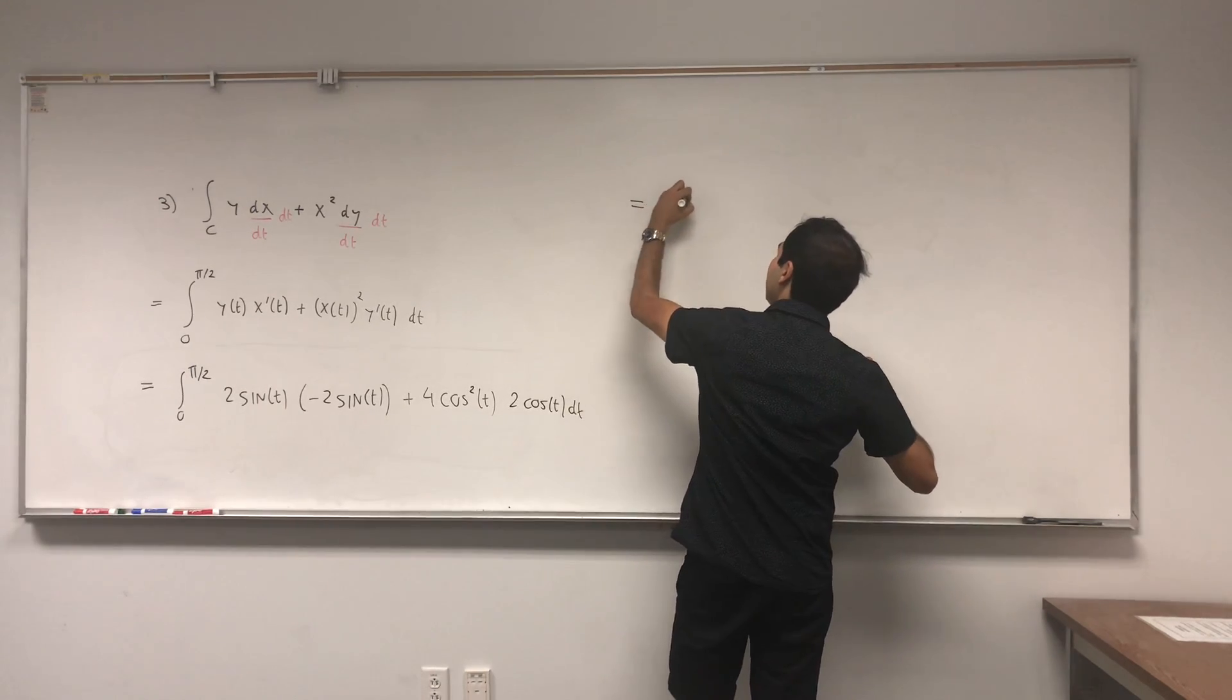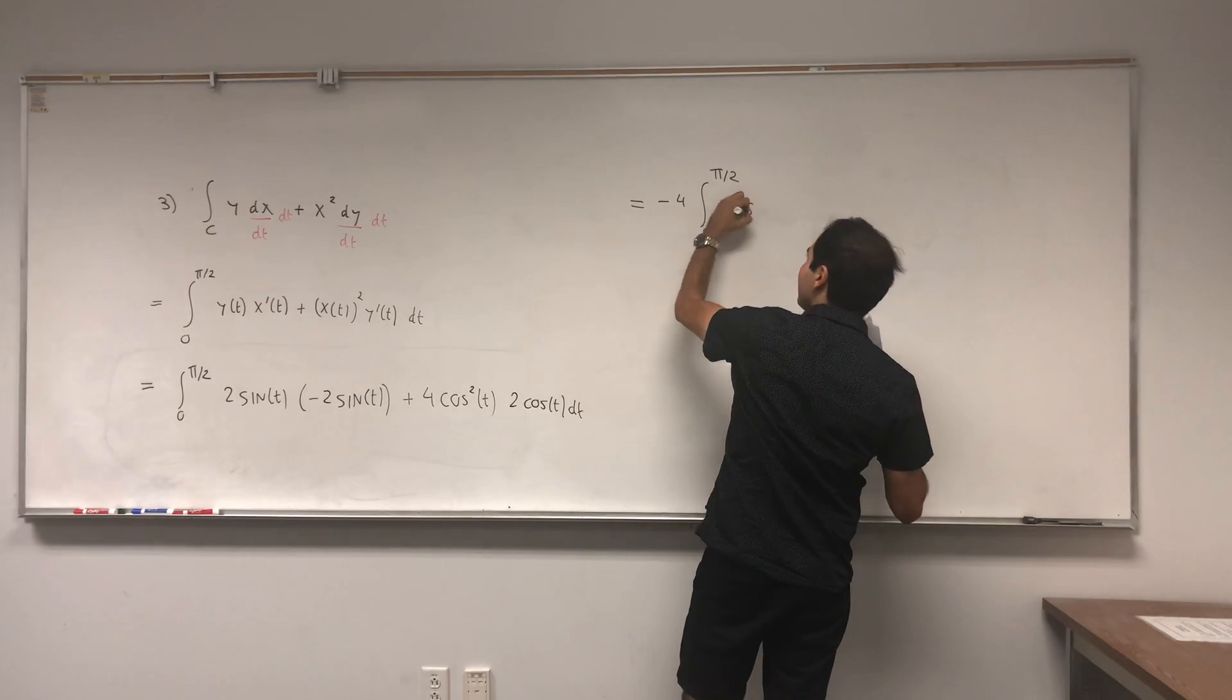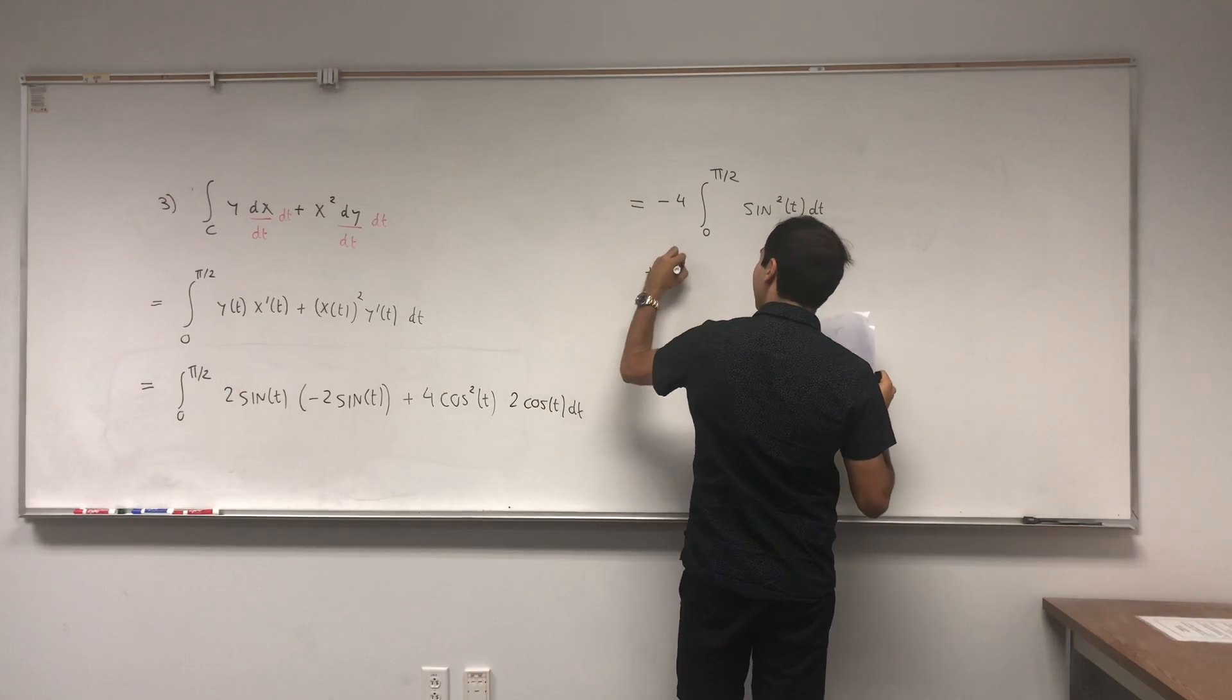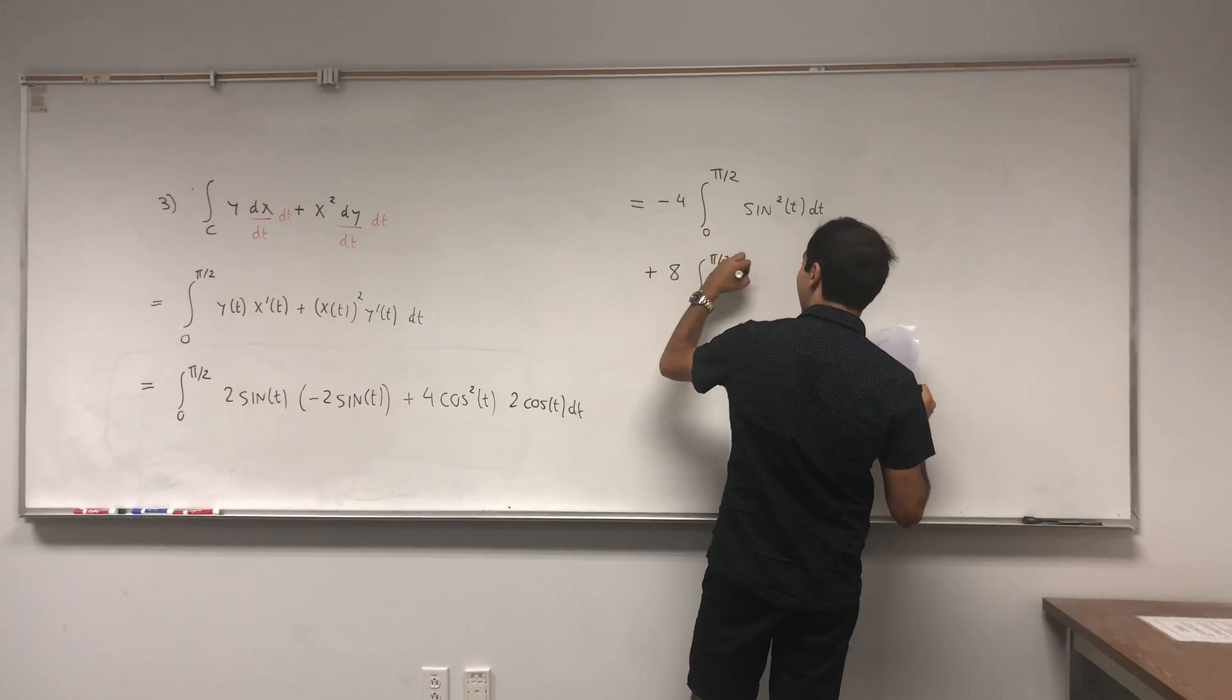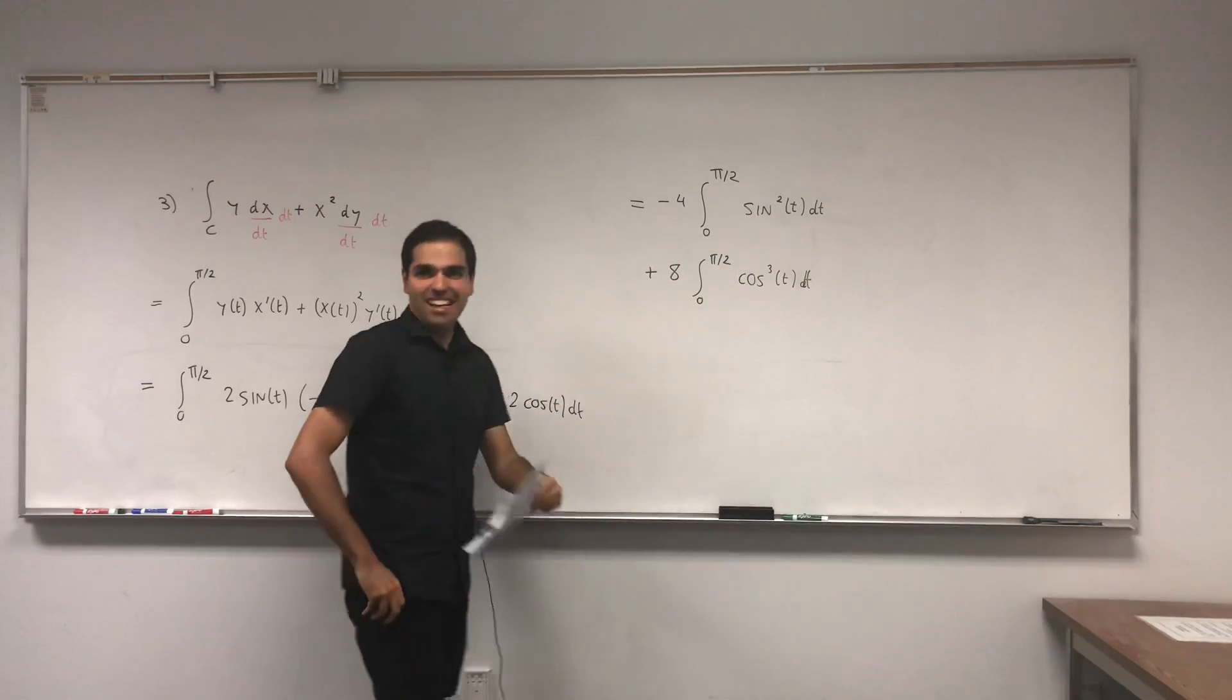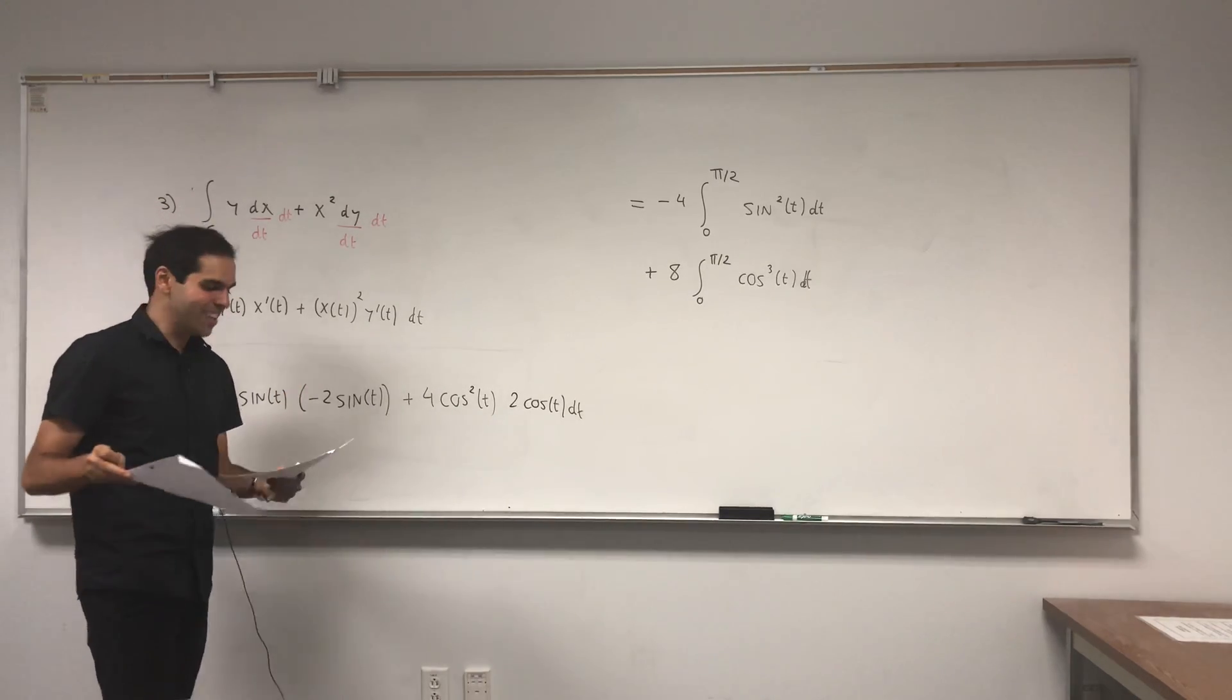So what you end up with are two very nasty integrals. We get minus 4 integral from 0 to pi over 2 of sine squared t dt plus 8 integral from 0 to pi over 2 of cosine cubed t dt. And yes, you gotta roll up your calculus sleeves. Fortunately I have short sleeves today.